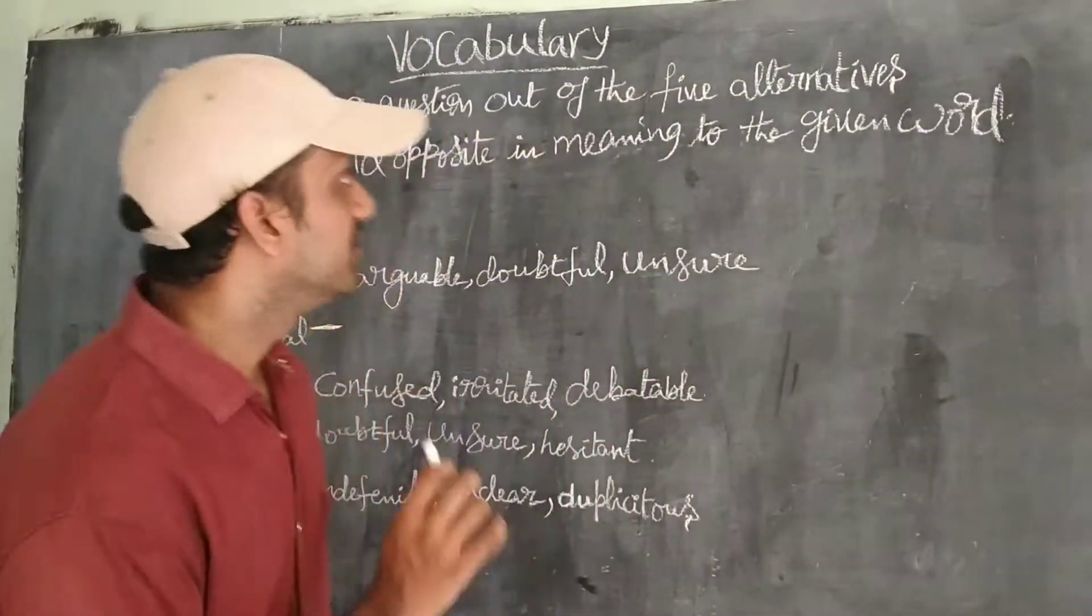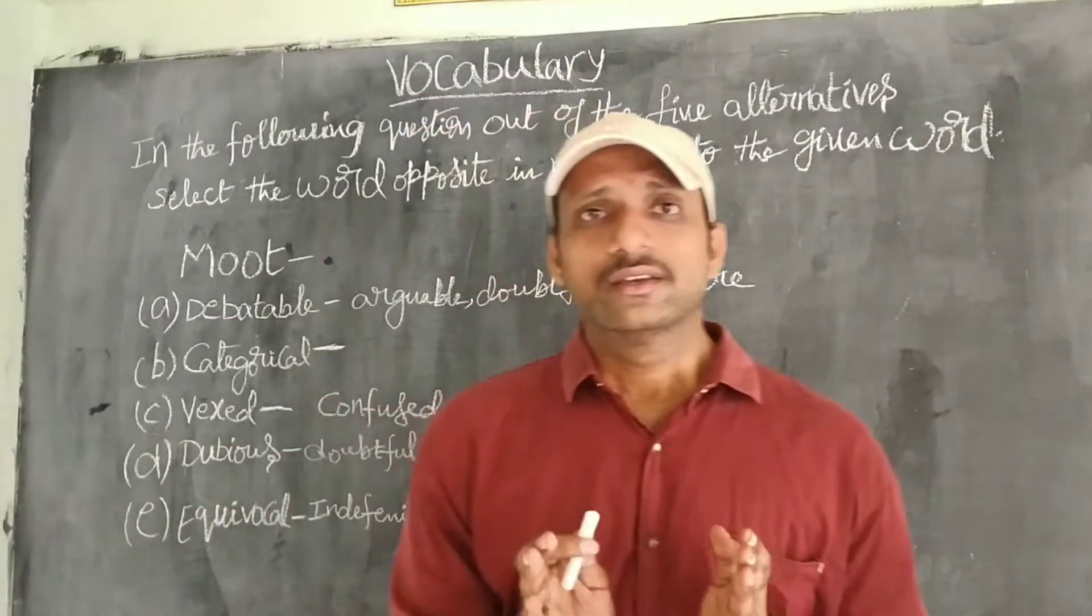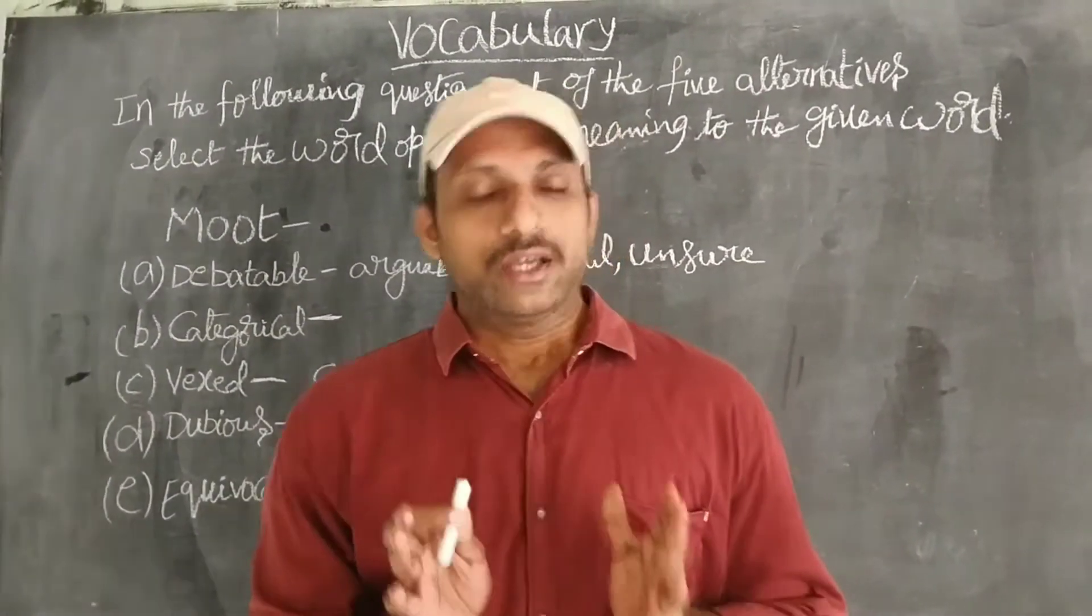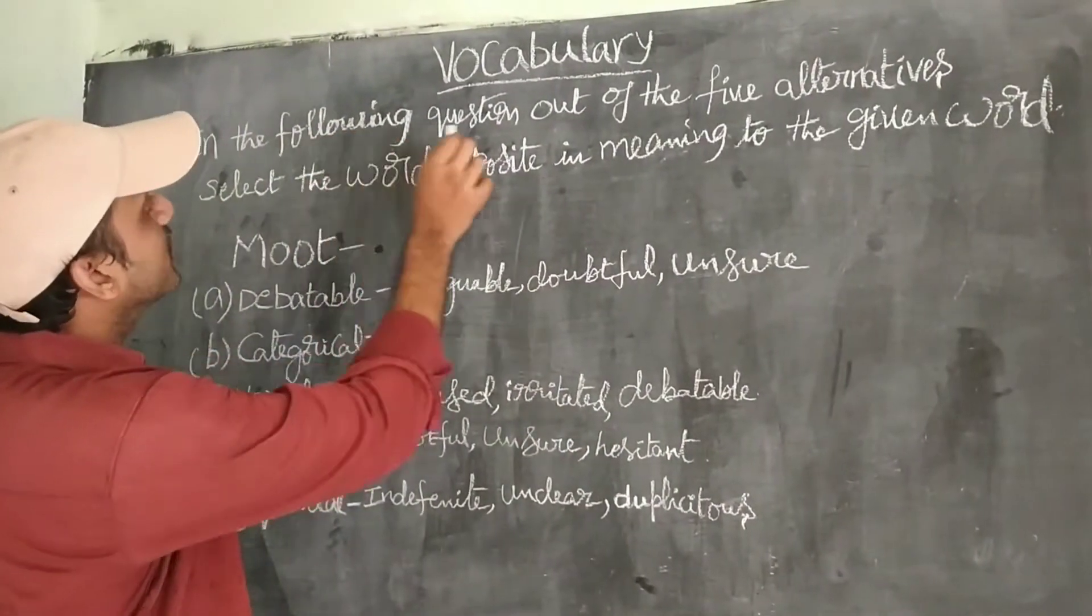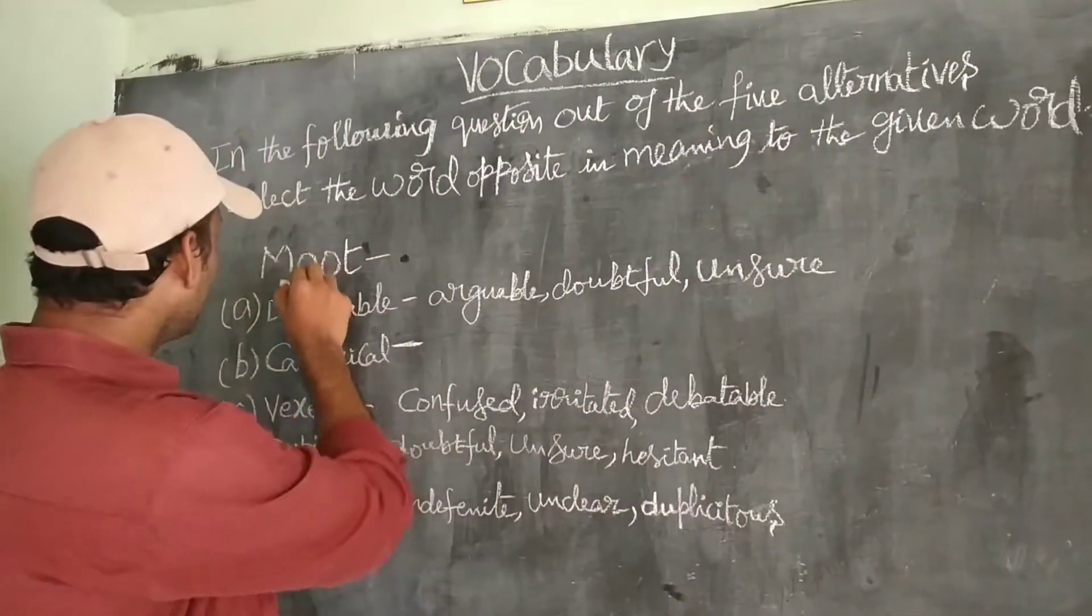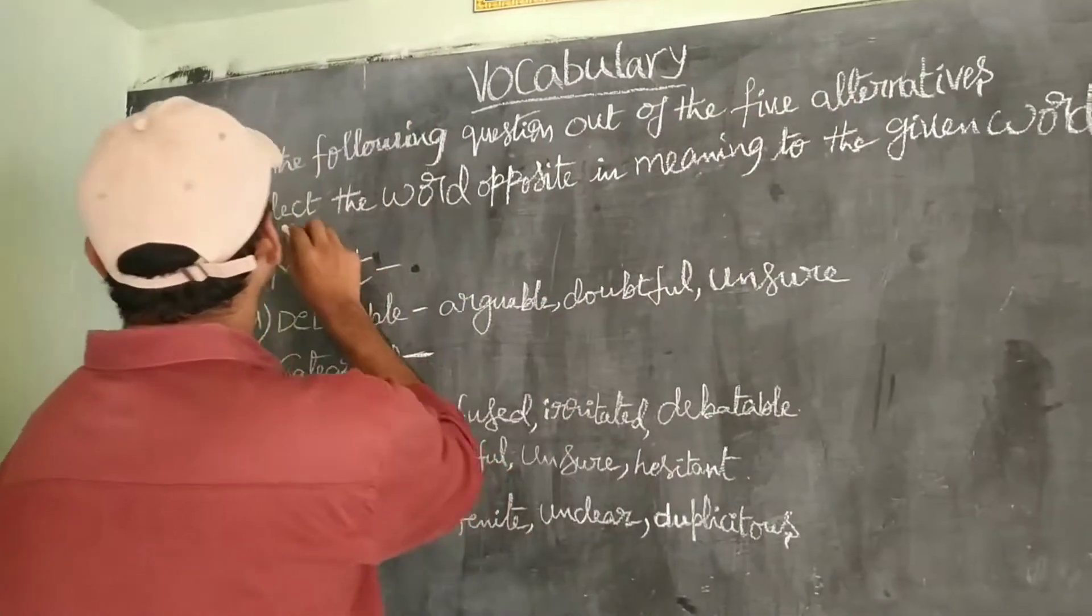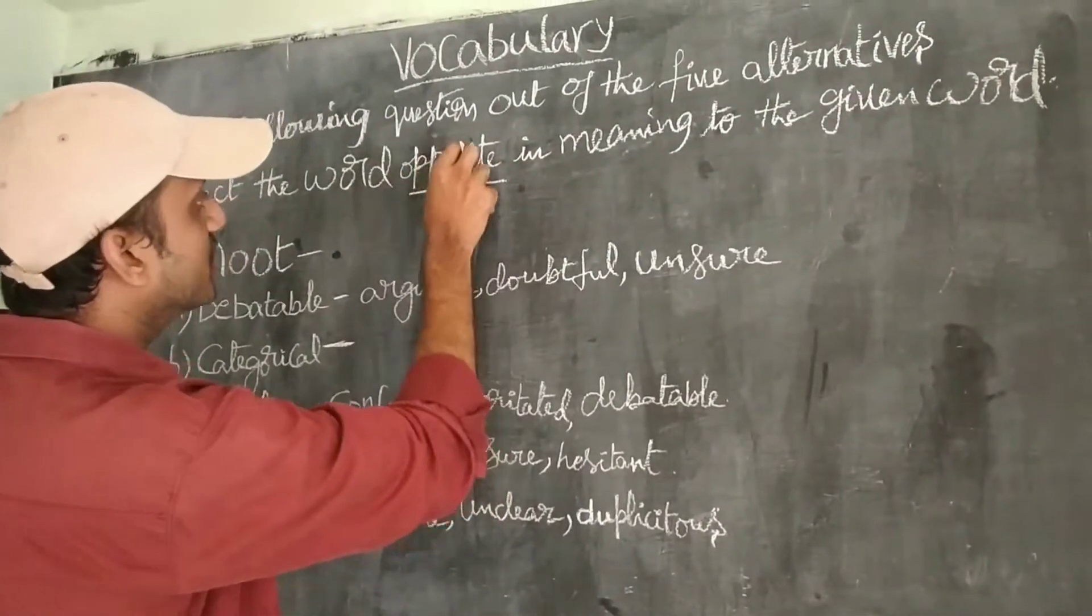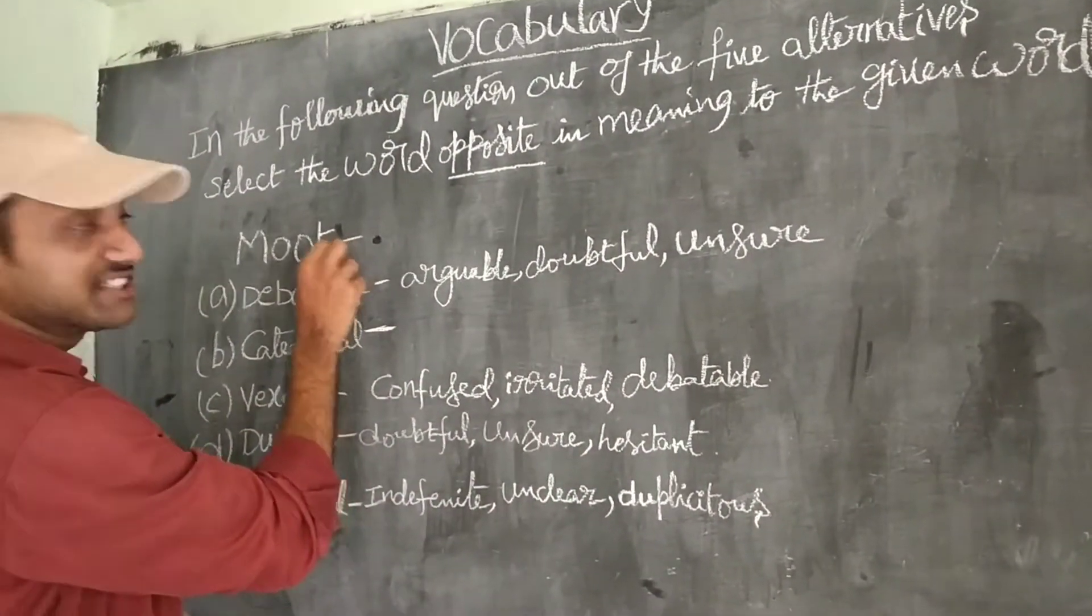So let us see today's topic is vocabulary. First of all, let me tell you the trick he plays in the exam, especially in online. Simply he will give some alternatives like this. In the following question, out of the five alternatives, he will give five alternatives here. In the sense options, indirectly. Five alternatives.